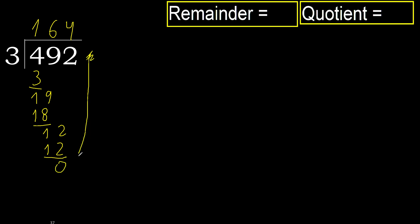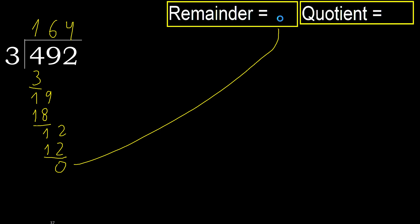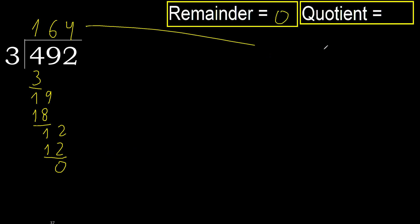There is no next number, therefore finish it. Ok, 492 divided by 3 is 164.